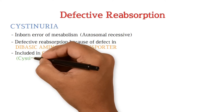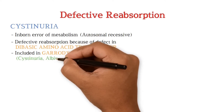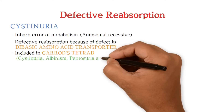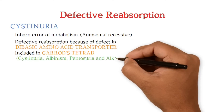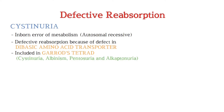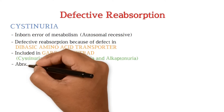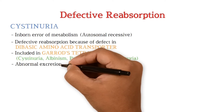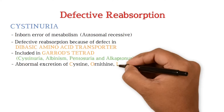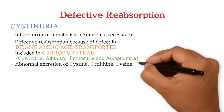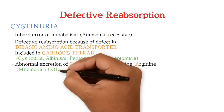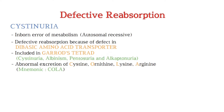Garrod's tetrad includes cystinuria, albinism, pentosuria, and alkaptonuria. This condition involves the excretion of cystine, ornithine, lysine, and arginine. The acronym for these excreted amino acids is COLA.